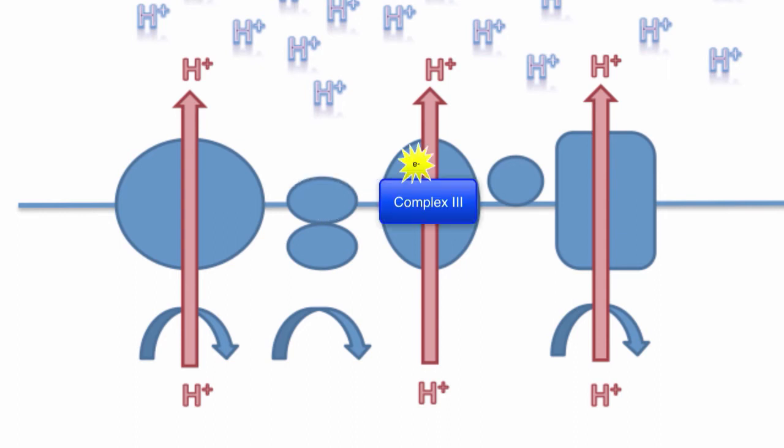Complex 3 then uses the energy from each electron that it receives from coenzyme Q to transfer protons into the intermembrane space. Then, it sends that electron through to cytochrome C.